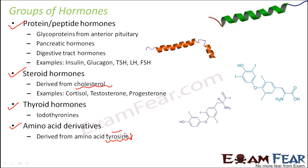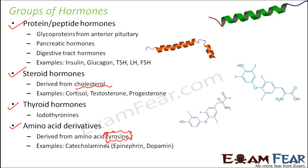Tyrosine is an amino acid. Any structure where the basic structure is tyrosine, with other groups added to it, forms these hormone structures. Examples of amino acid derivatives are the catecholamines — such as epinephrine and dopamine. So broadly, these are the different groups of hormones.